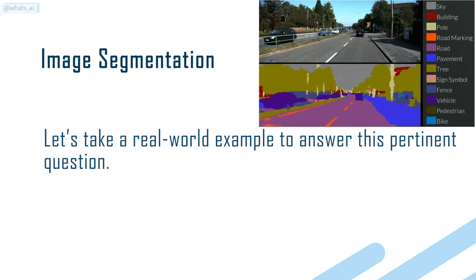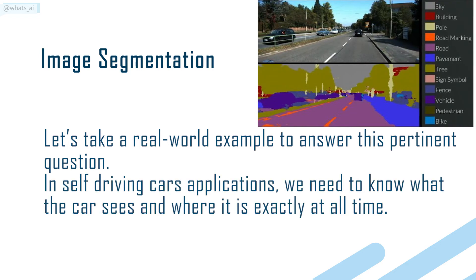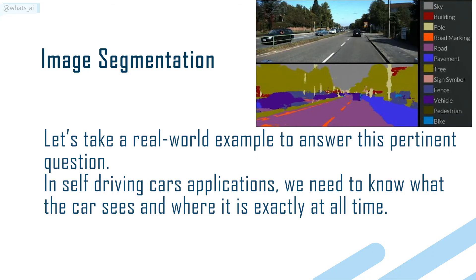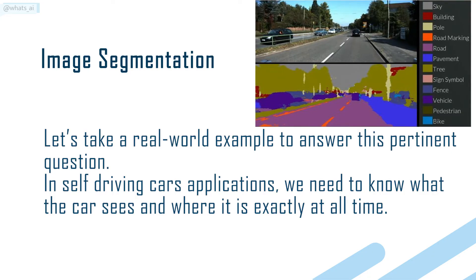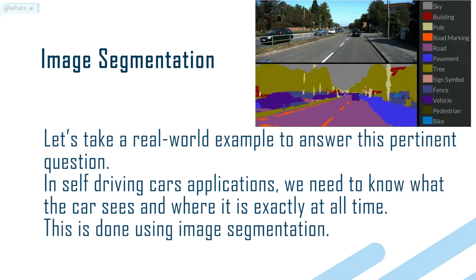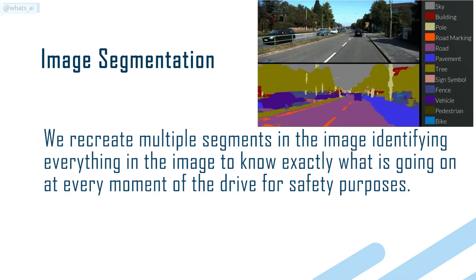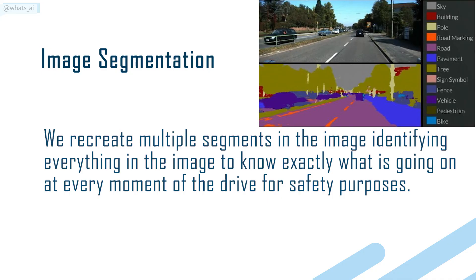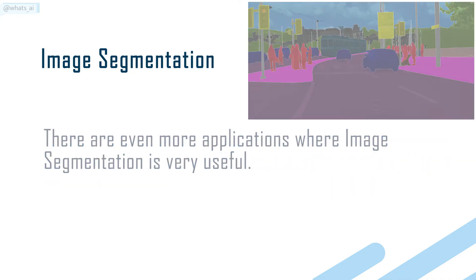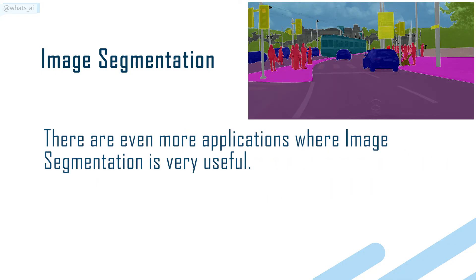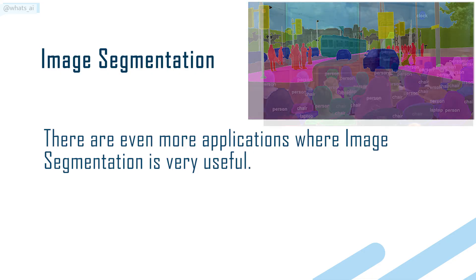Let's take a real-world example to answer this pertinent question. In self-driving car applications, we need to know what the car sees and where it is exactly at all times. This is done using image segmentation. We recreate multiple segments in the image identifying everything in the image, to know exactly what is going on at every moment of the drive for safety purposes. There are even more applications where image segmentation is very useful.